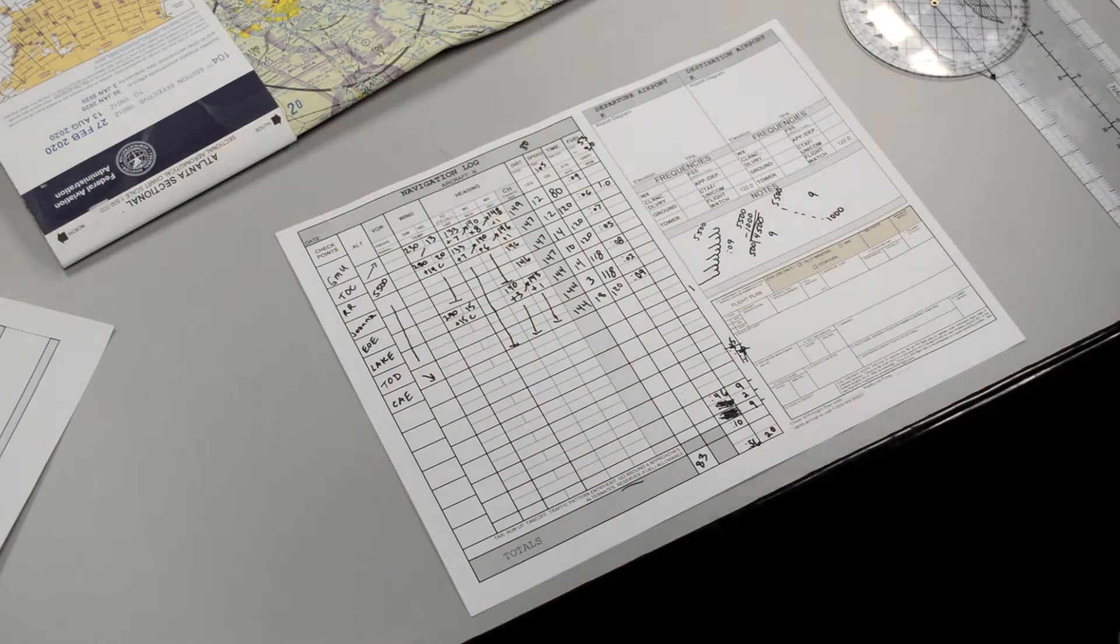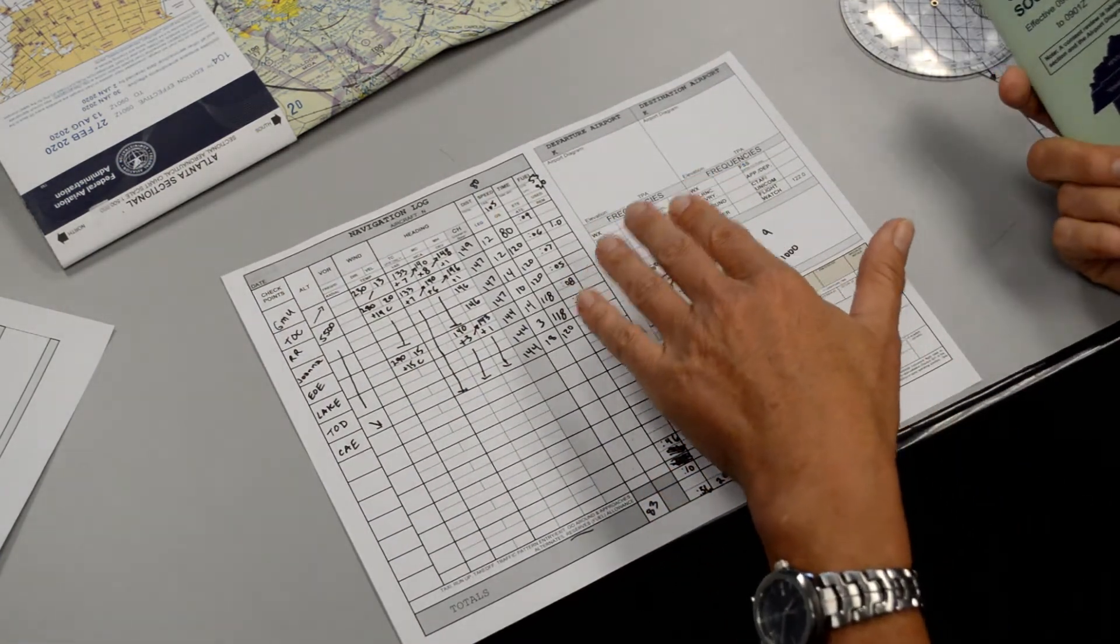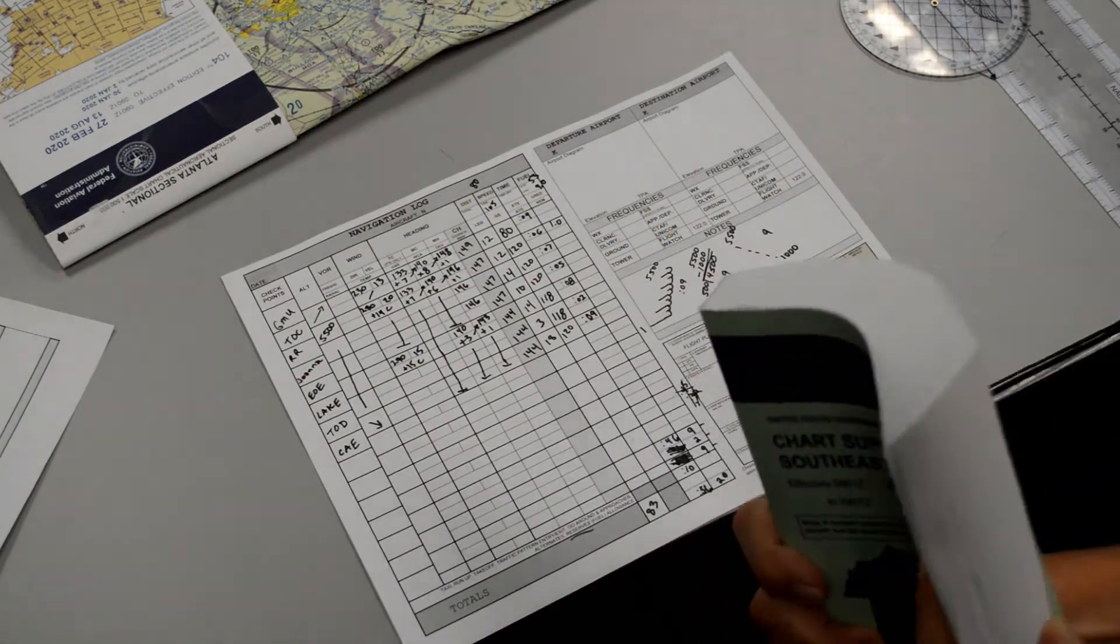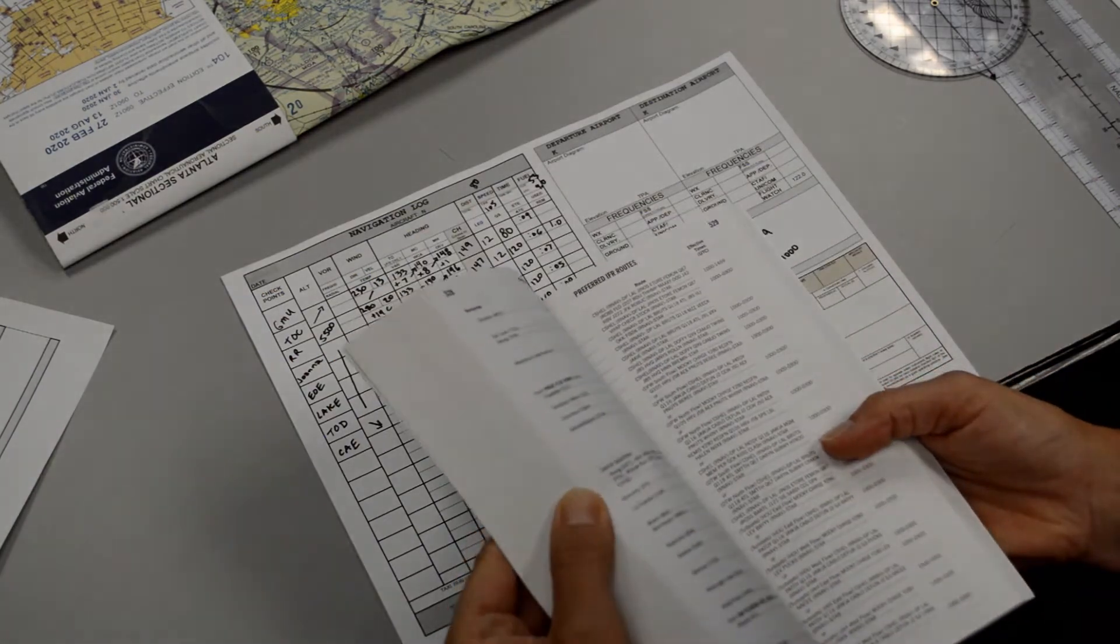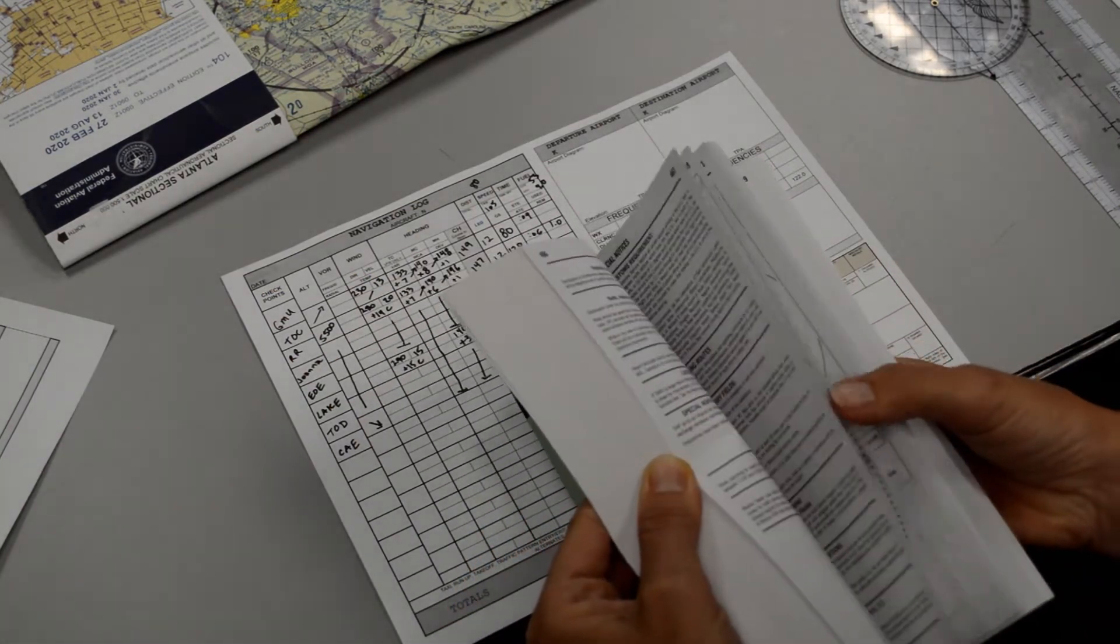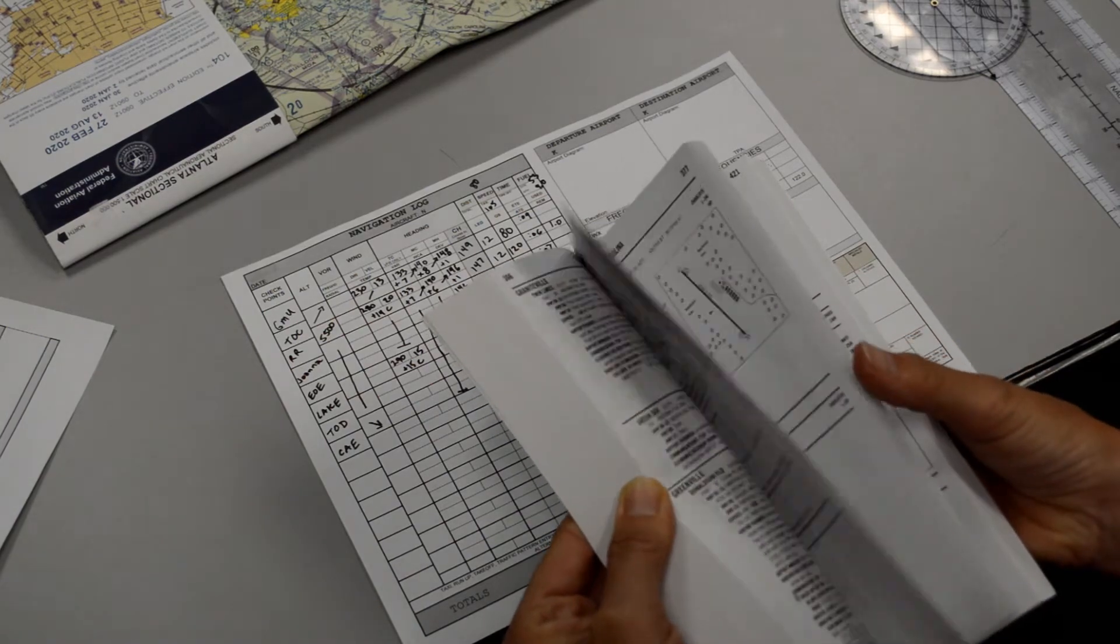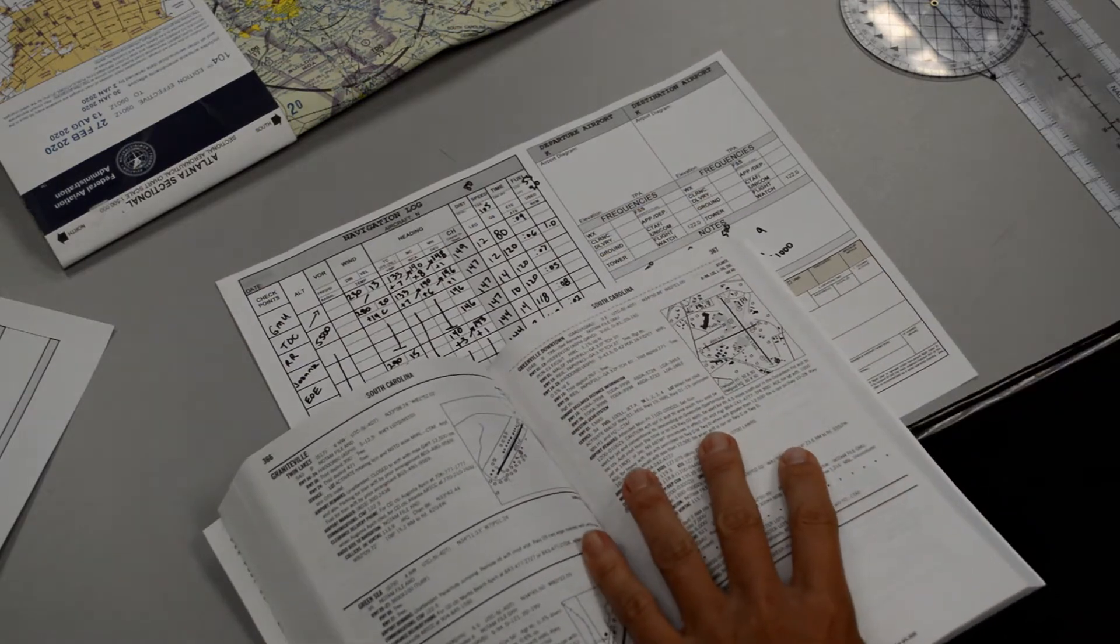If we want to, it's completely optional, we can write down some information about our departure airport and our destination airport. You don't have to, but some people like to. So we have to go to the chart supplement book, and we'll find the airports. The states are alphabetical, so we need to find South Carolina, and then we'd find Greenville. We can fill in this information.